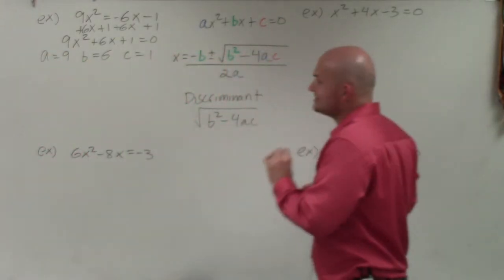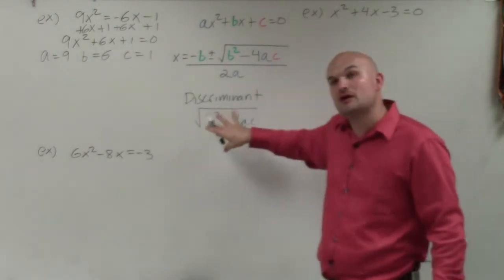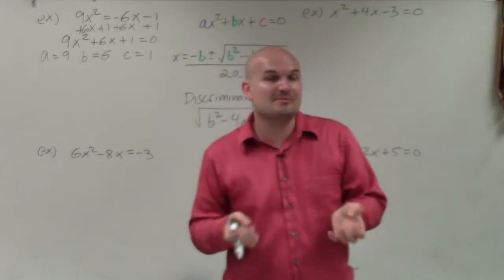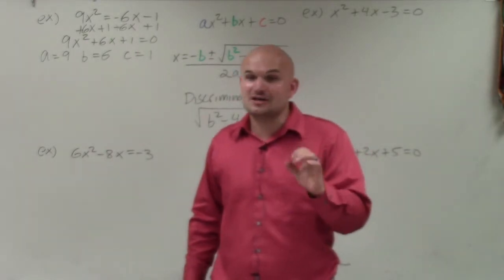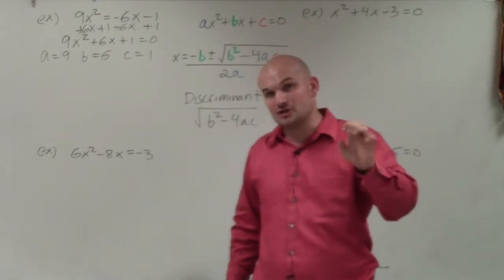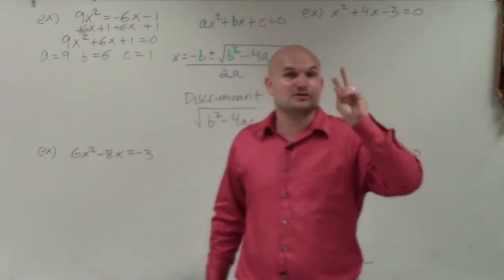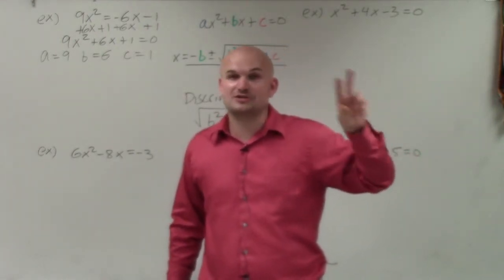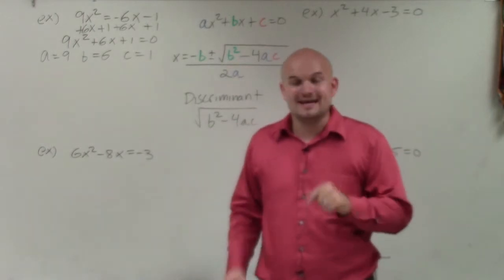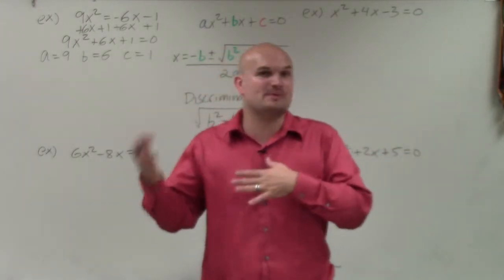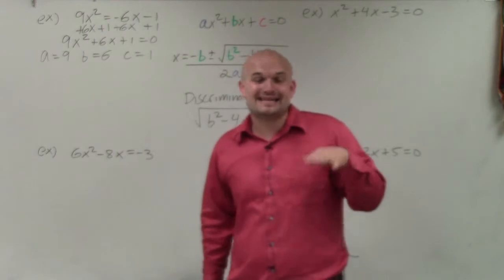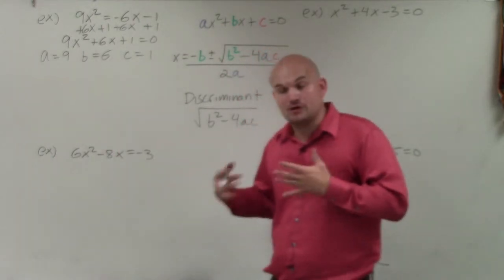The next helpful thing is to figure out the discriminant first, because the discriminant is all the values under the square root. Knowing what type of number that is can be very helpful. If that number is 0, we'll have one solution. If that number is a perfect square, we'll have two rational real solutions. If it's a non-square number — for example, a square number would be 9, a non-square would be 5 — then we'll have two real irrational solutions. And if that number is negative, we'll have two imaginary or complex solutions.